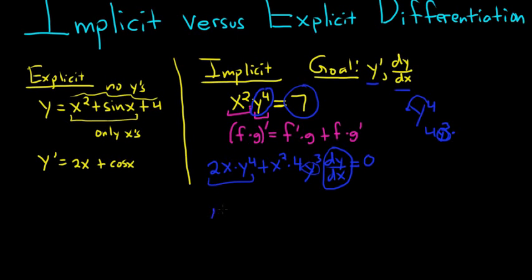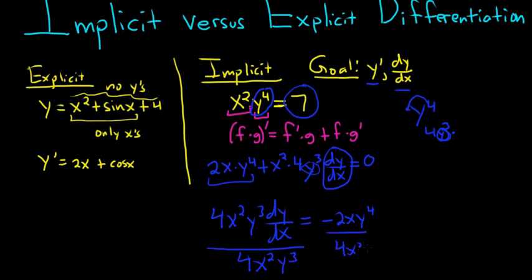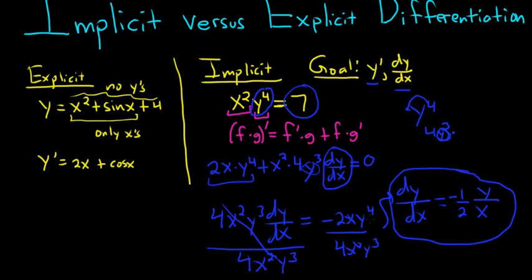We would subtract this piece, so we would get 4x squared y cubed dy dx equals negative 2x y to the fourth. And then to finish, we would divide by 4x squared y cubed. These cancel, and so dy dx equals, let's be really careful here. The 2 and the 4 give us a negative 1 half. The x and the x squared leave us with an x on the bottom. And the y to the fourth and the y cubed leave us with a y up top. So we found the derivative of y without finding y.